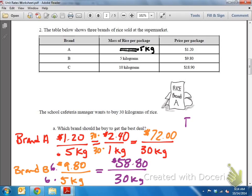Let's take a look at brand C. I think we're going to run into the same situation where we don't have to find the unit rate because I already have 10 kilograms and 10 is a multiple of 30. So to get 30 kilograms, I just need to multiply both top and bottom of my rate by 3.